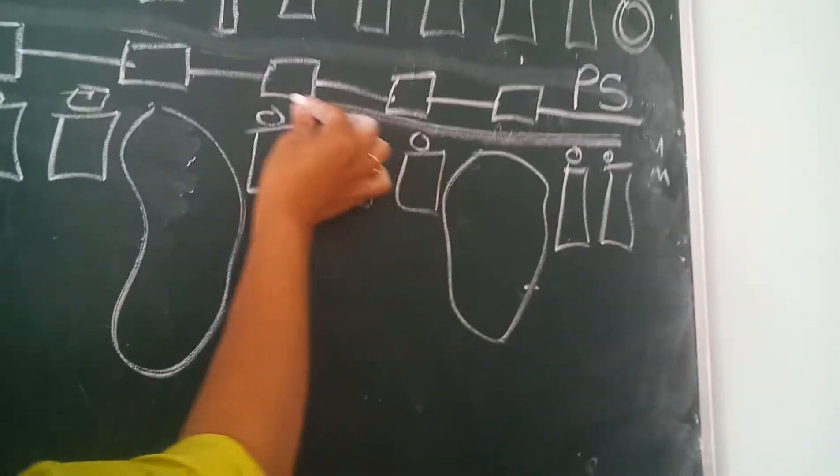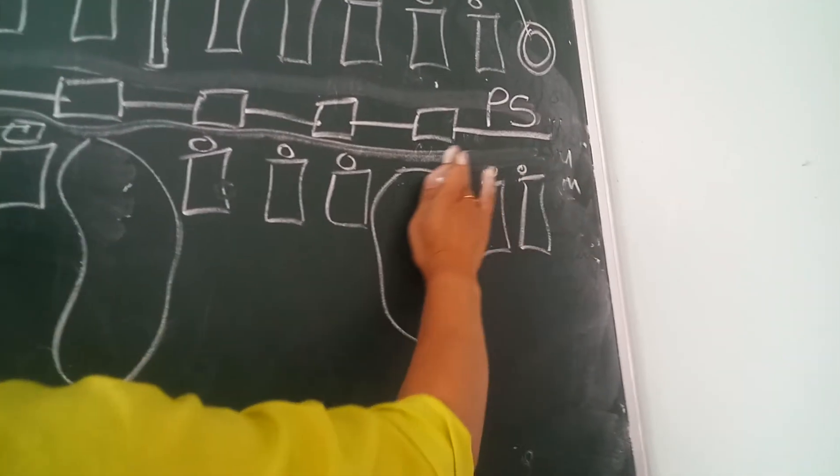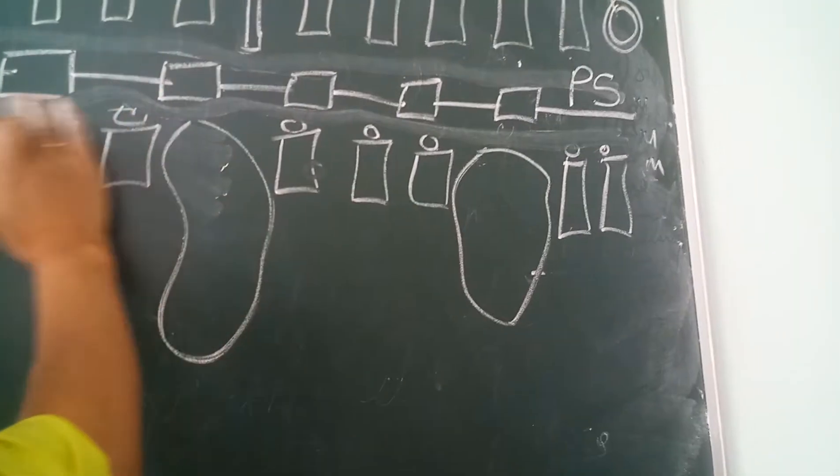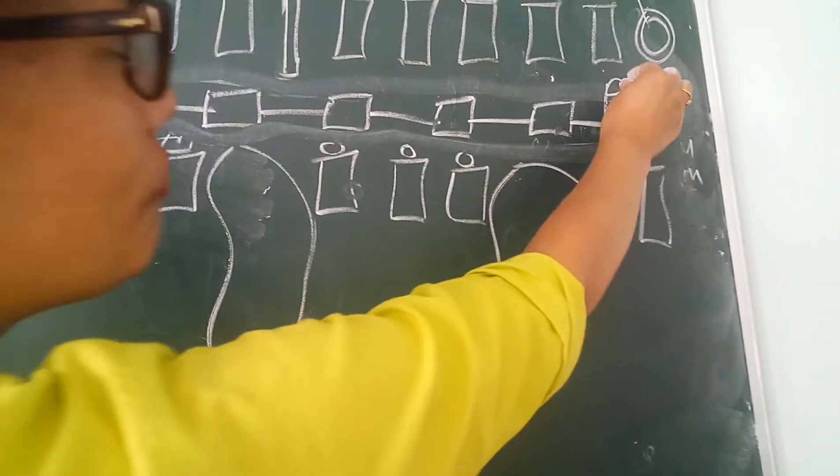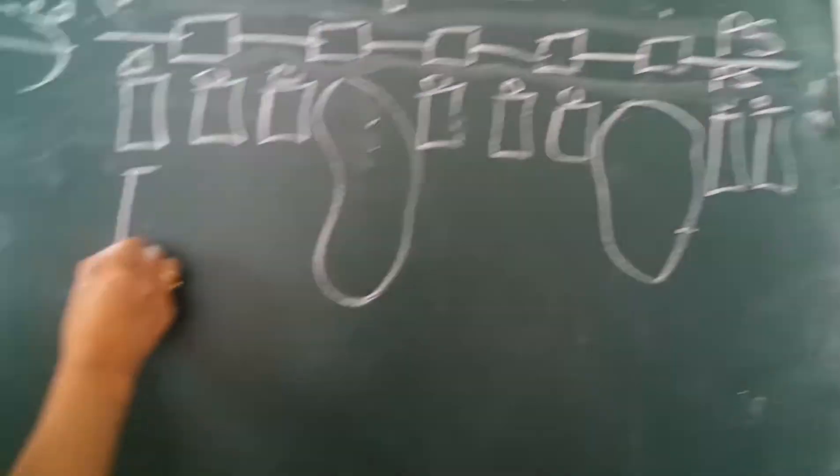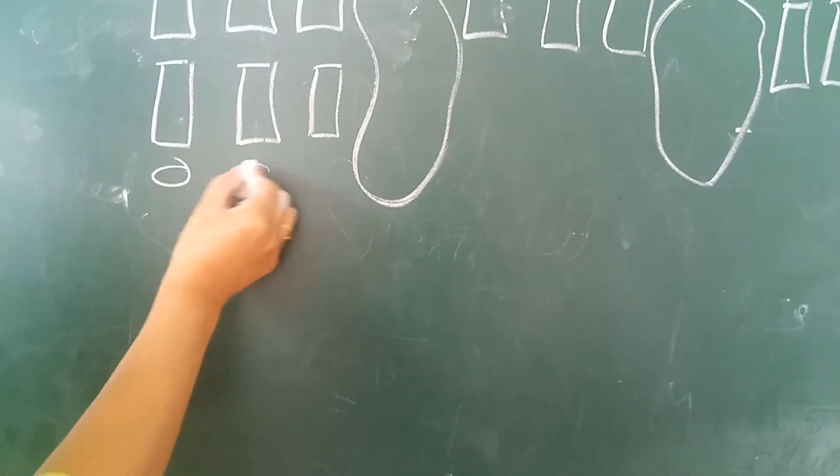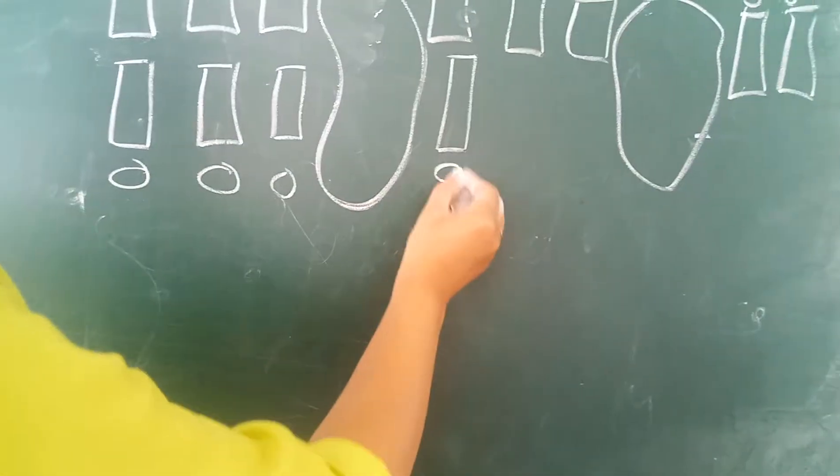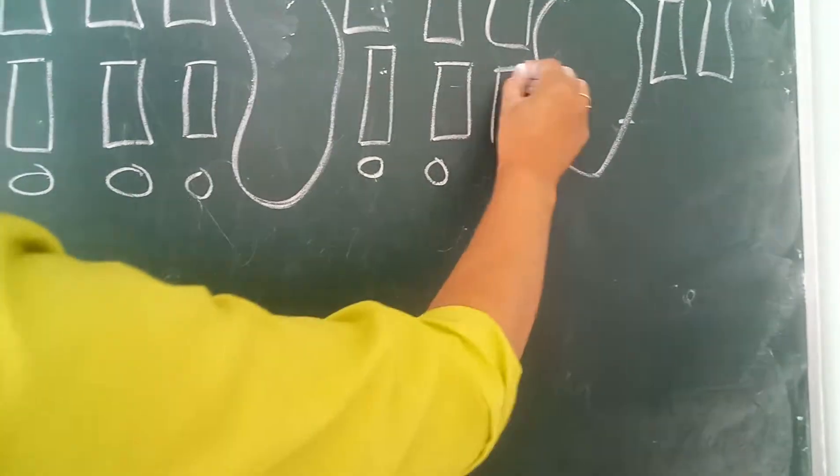This space here, it is again called the periplasmic space. So on both sides of this cell wall, peptidoglycan, you have periplasmic space. Then this is lipid bilayer. The tail facing towards each other and the head away from them.